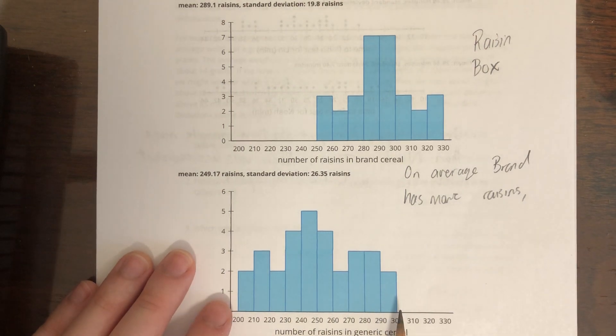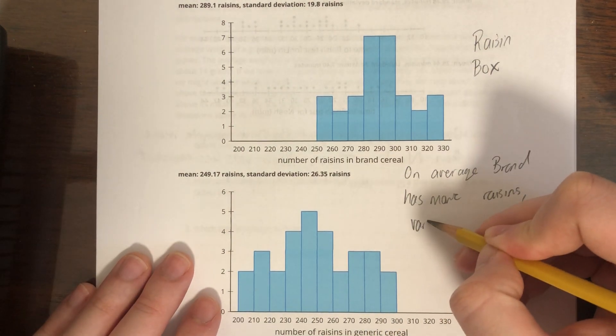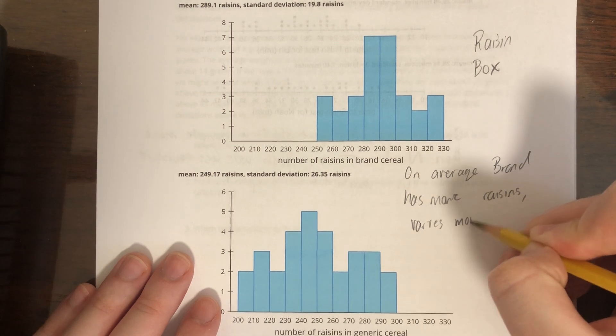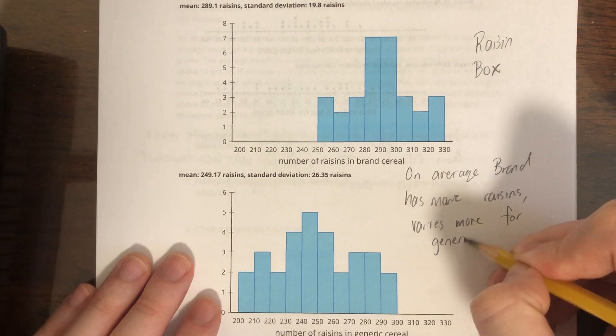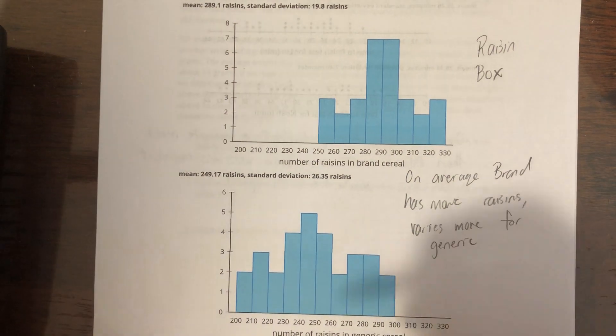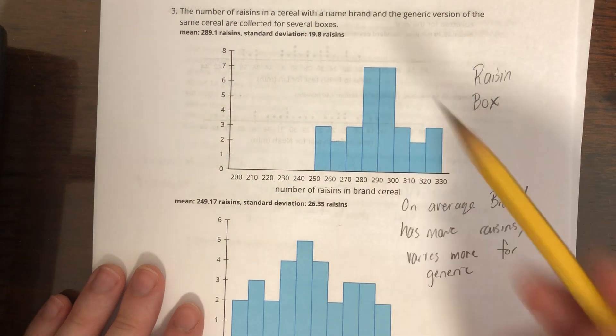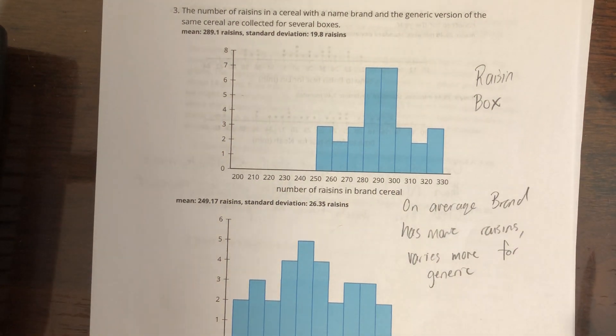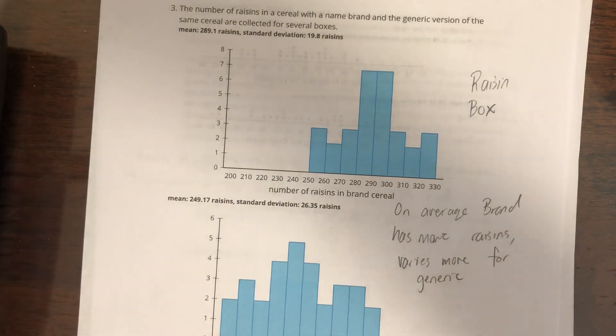And we can clearly see that the number of raisins varies more in generic. It's got a wider spread and the standard deviation is far greater, 26 compared to about 20. Okay, that is all for 13.3. Have a great day.